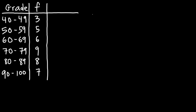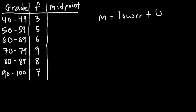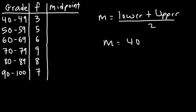Let's take this one step at a time and calculate the midpoint values first. The midpoint is the sum of the lower boundary plus the upper boundary of the interval, divided by 2. For the grade interval of 40 to 49, that's 40 plus 49 divided by 2, which gives us 89 divided by 2, equaling 44.5. So that's the midpoint for this interval.